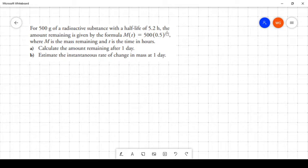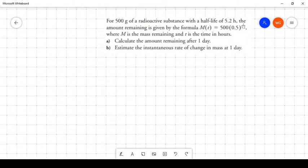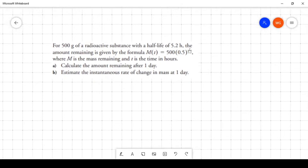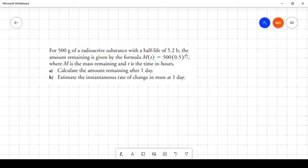So here we have a situation that says for 500 grams of a radioactive substance with a half-life of 5.2 hours, the amount remaining is given by the formula M(t) equals 500 times 0.5 to the power of t over 5.2. For that problem, we have a formula that's been given to us, and it's our job to use it to first of all calculate the amount remaining after one day. Well that part is fairly straightforward because in a day there are 24 hours, and this half-life formula has been stated to us in hours.